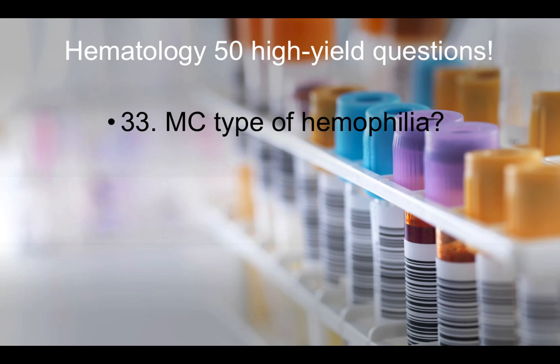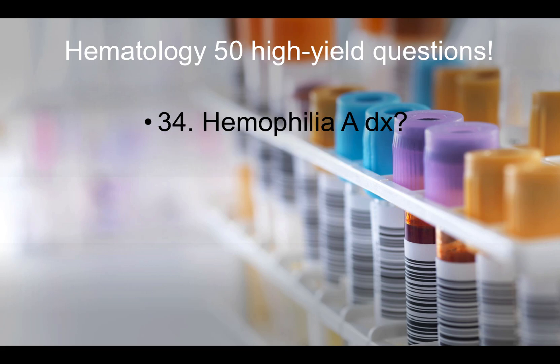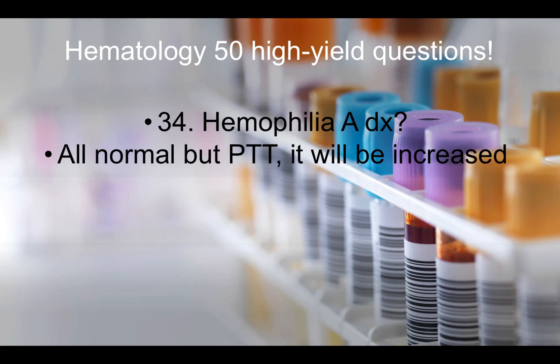Question thirty-three: Most common type of hemophilia — that would be hemophilia A. Question thirty-four: Hemophilia A diagnosis — everything is normal except PTT, which will be increased. The INR and PT will all be normal, but PTT will be elevated.